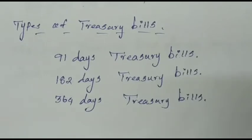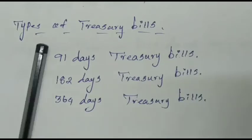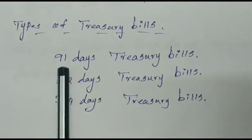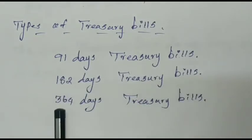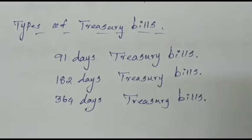Welcome to my channel. This is Ponykwar. Today we are focusing on types of Treasury Bills. We have three types: 91 Days Treasury Bill, 182 Days Treasury Bill, and 364 Days Treasury Bill. This is the most important thing.